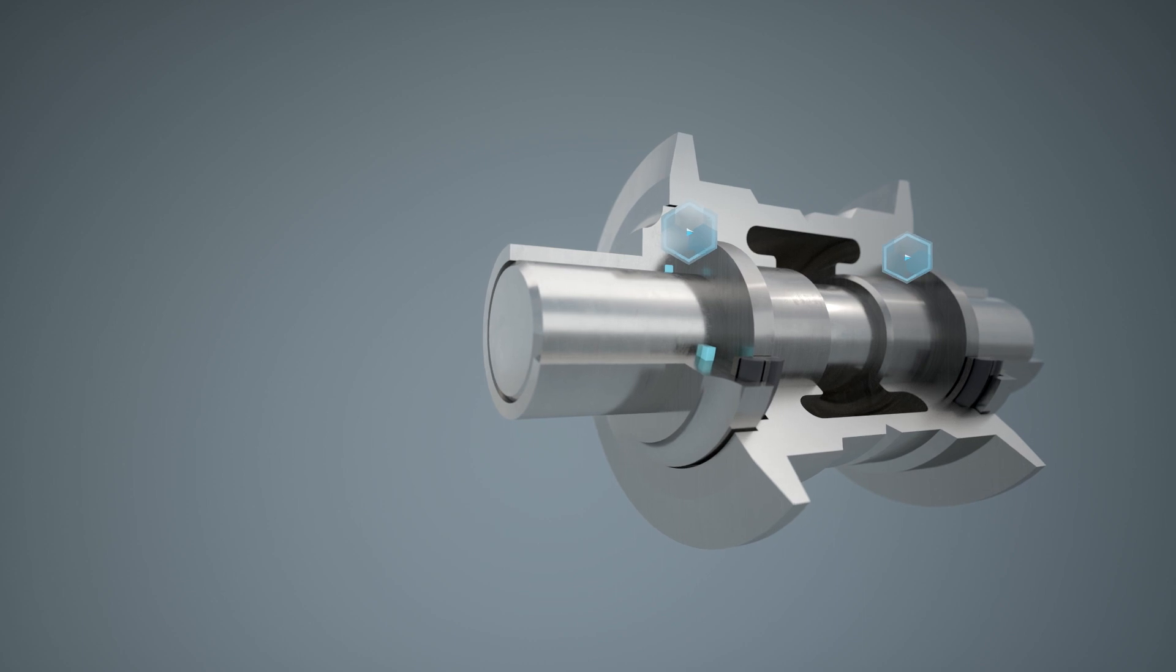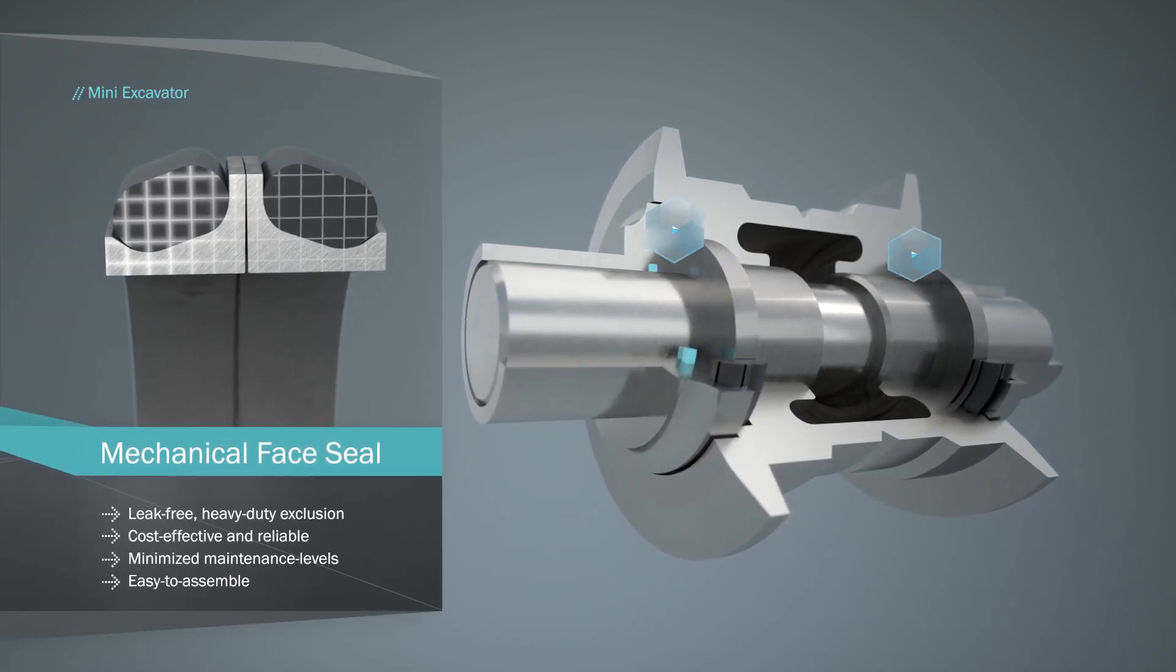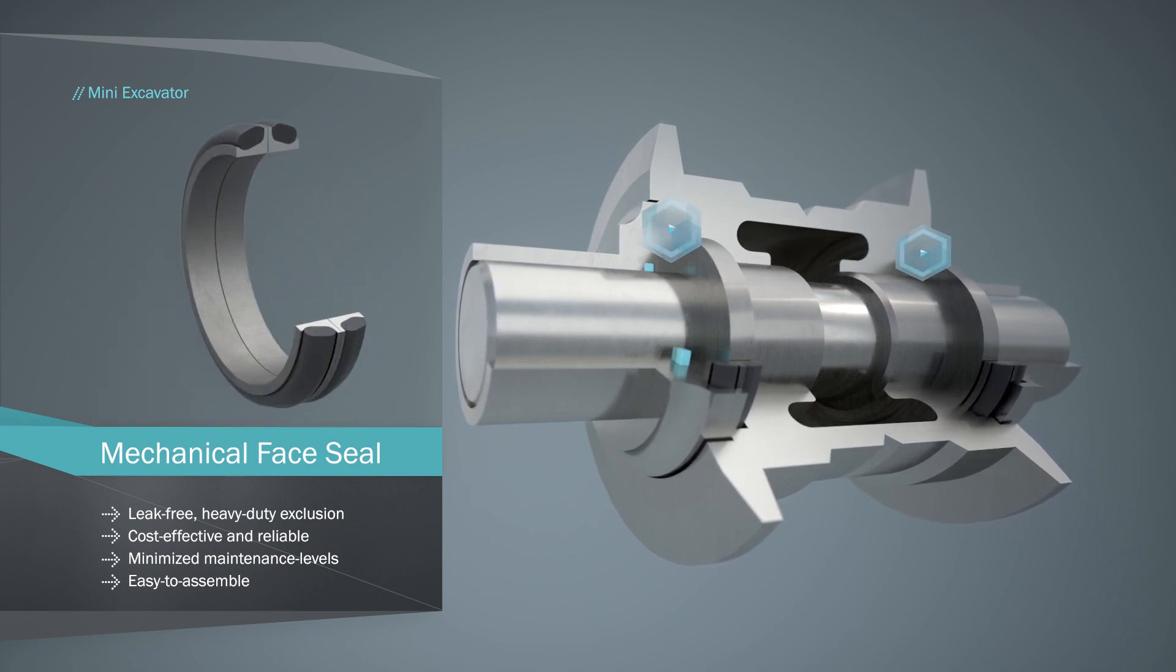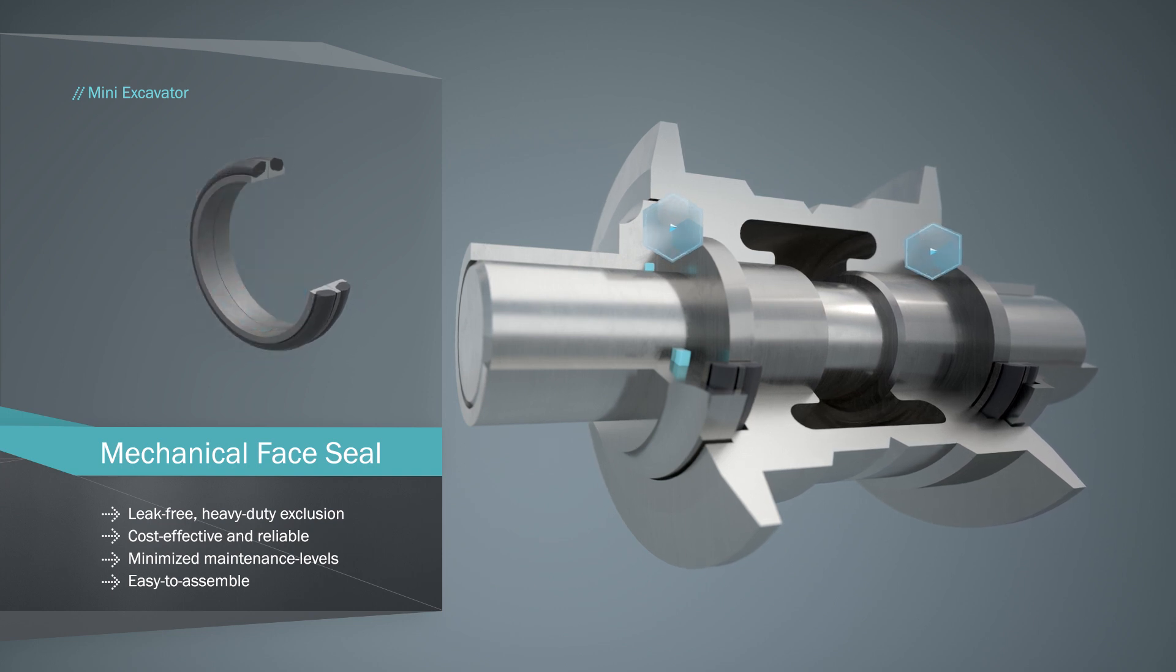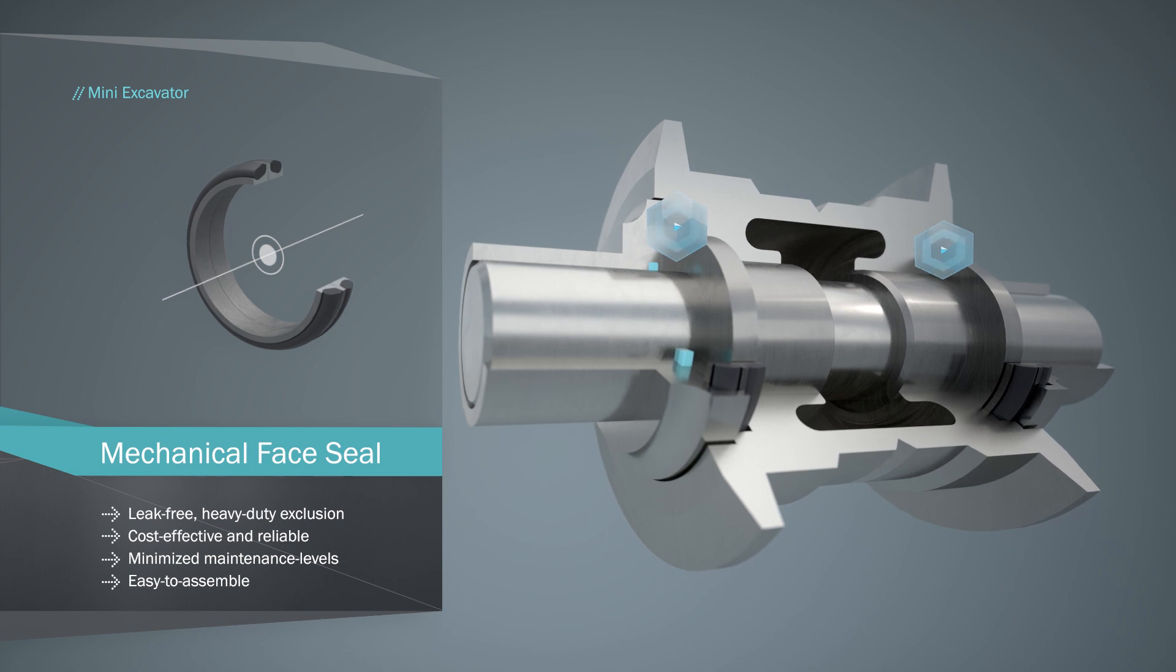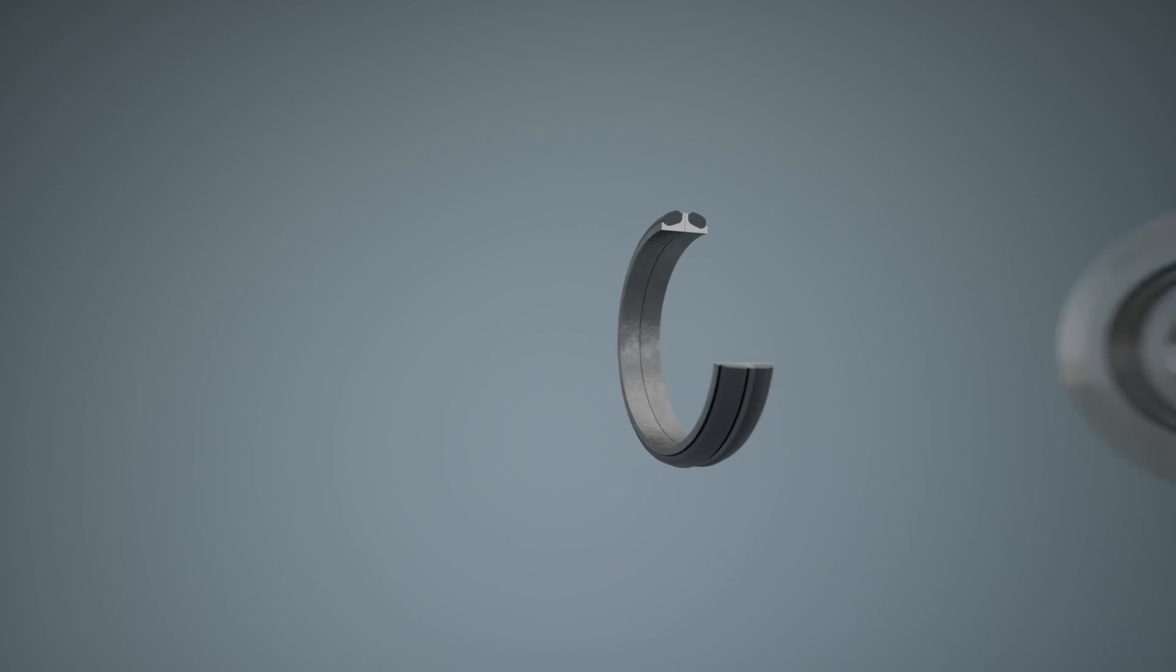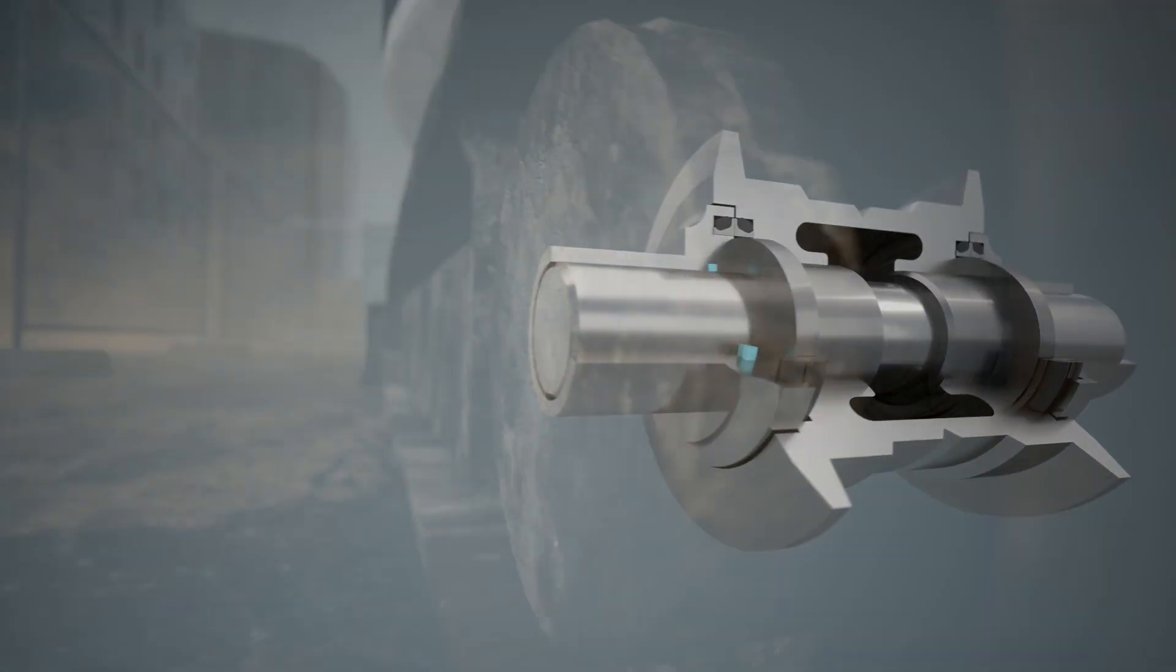A mechanical face seal offers a robust, cost-effective solution to protect rotating components. It operates with a simple, reliable design to efficiently exclude all types of contaminants while retaining and protecting lubricating fluids. It is also self-centering to compensate for shaft misalignment and eccentricity and is easy to assemble. Mechanical face seals offer minimized maintenance levels and optimal reliability.